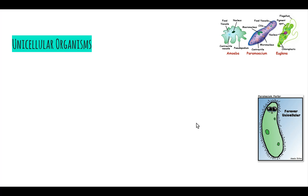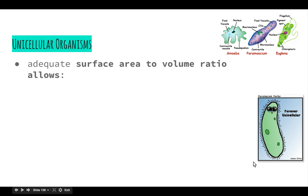Before we do that, we're going to quickly look at the difference between unicellular and multicellular organisms. Unicellular organisms are obviously organisms made up of only one cell, and because they're only made up of one cell, their surface area to volume ratio is quite high.